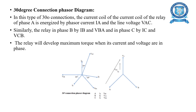In the 30-degree connection phasor diagram, the current coil of the relay for phase A is energized by phase current IA and line voltage VAC. Similarly, the relay for phase B is energized by IB and VBA, and phase C by IC and VCB. The relay will develop maximum torque when its current and voltage are in phase, as shown in the diagram.